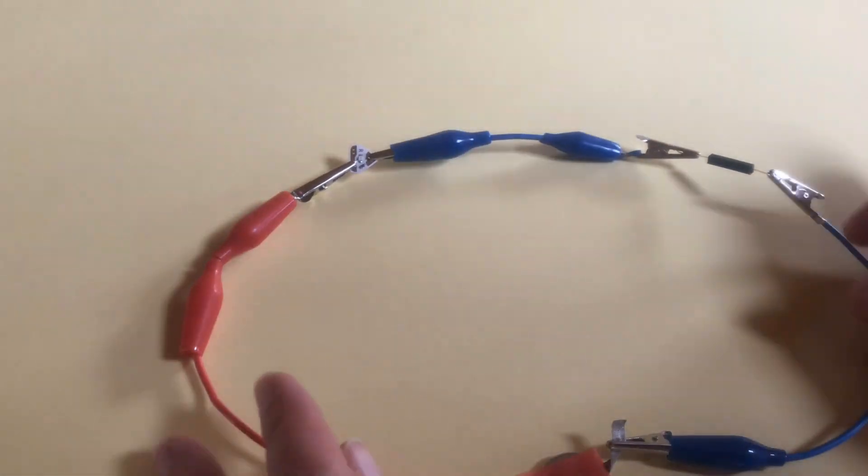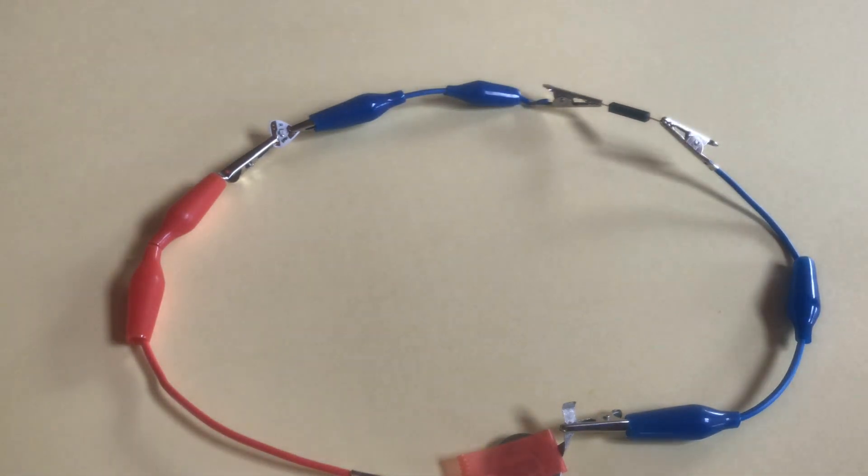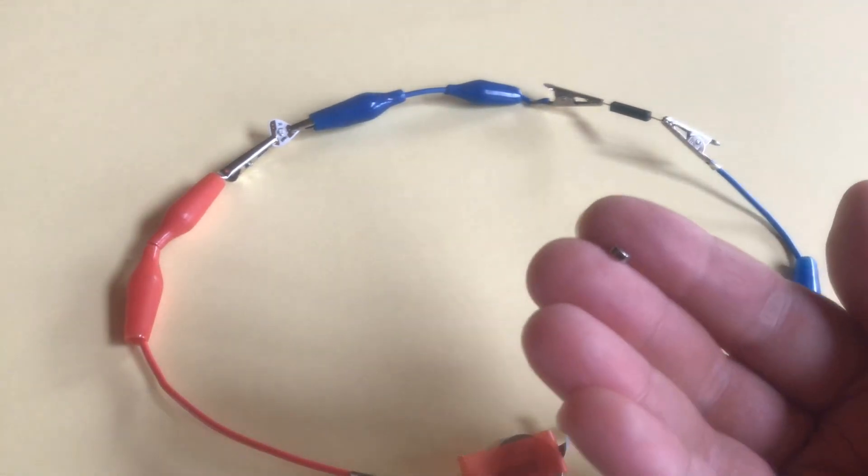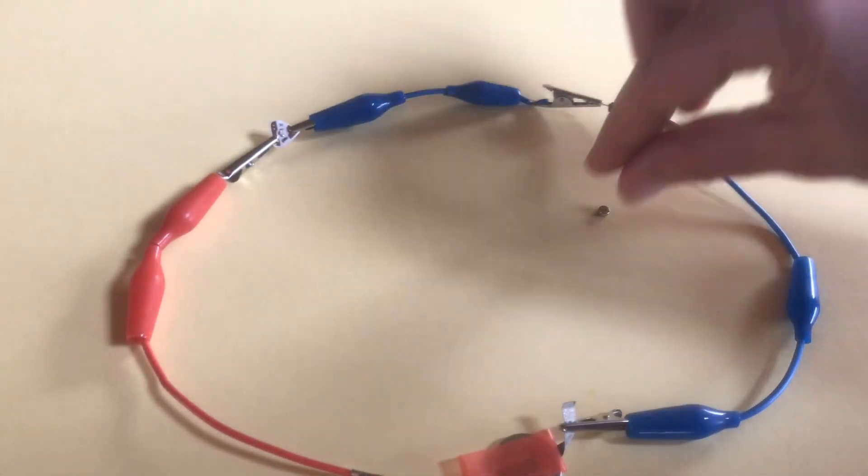All right, so now this is an incomplete circuit because the reed switch is currently open. To close the switch, to close the circuit, we need to add a magnet. And this one's a really little tiny one.